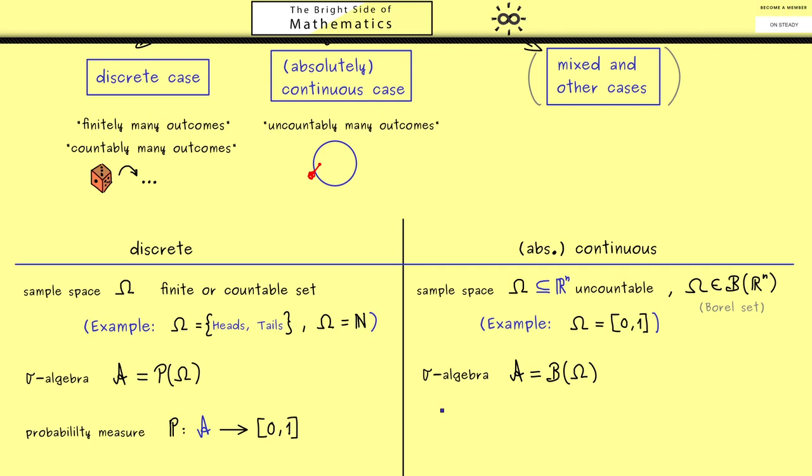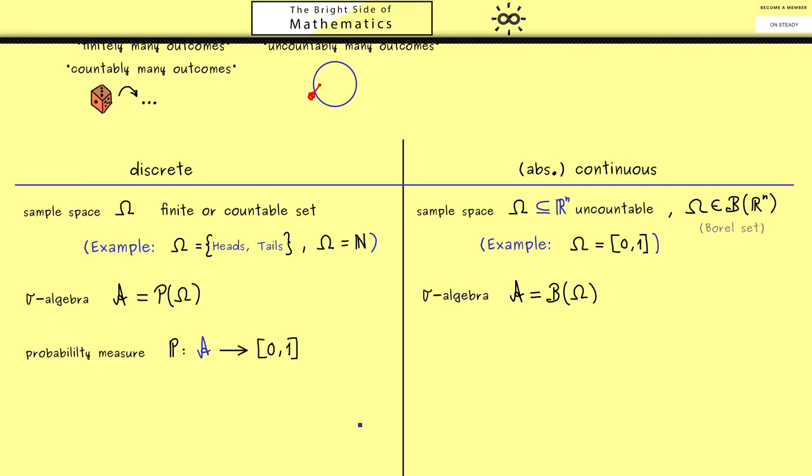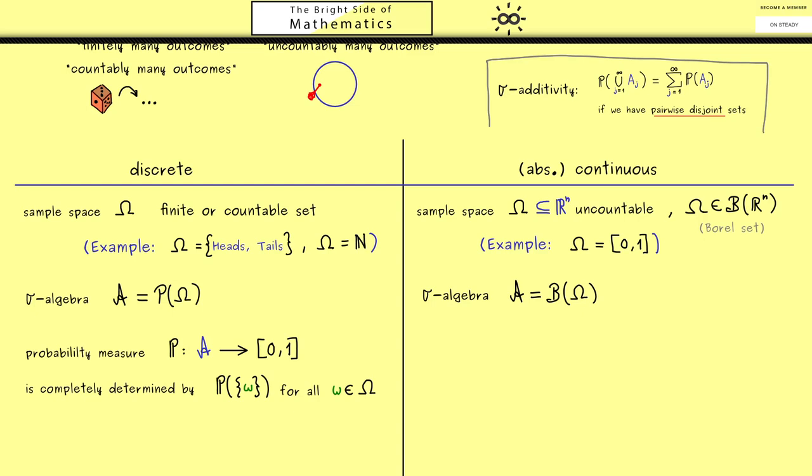This means we don't have all the subsets of omega, but still a lot of them. Therefore, our probability measure can still give probabilities to a lot of events. Speaking of probability measures, this is the next thing we want to compare. In the discrete case, measuring a singleton is very useful. If you know these numbers for all lowercase omega in the sample space omega, you know the whole probability measure. This immediately comes out of the sigma additivity of the probability measure.